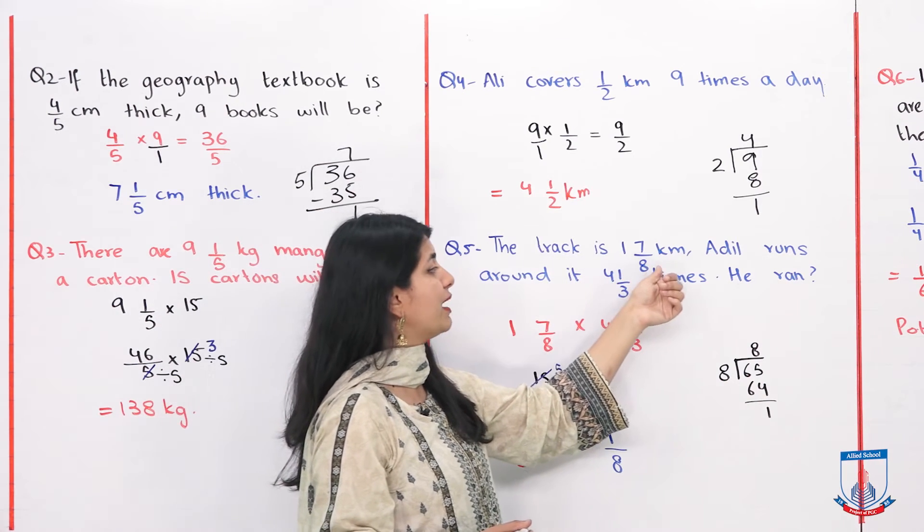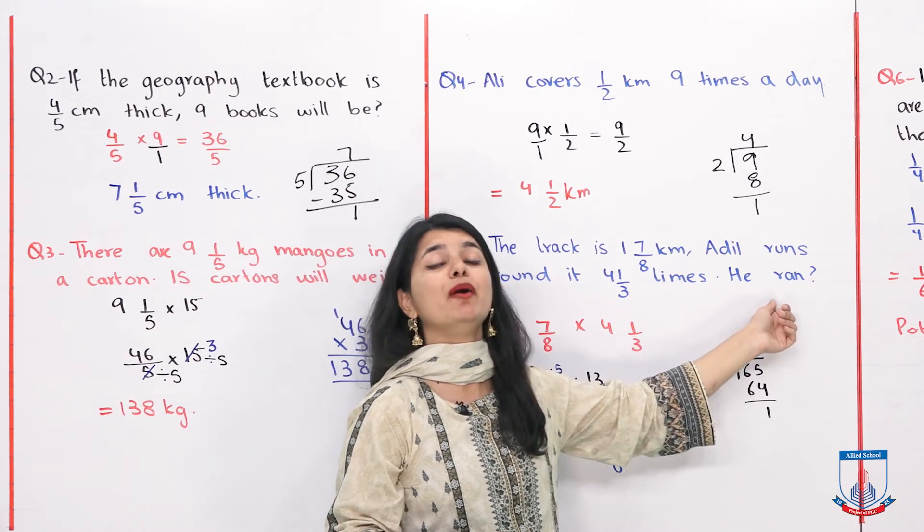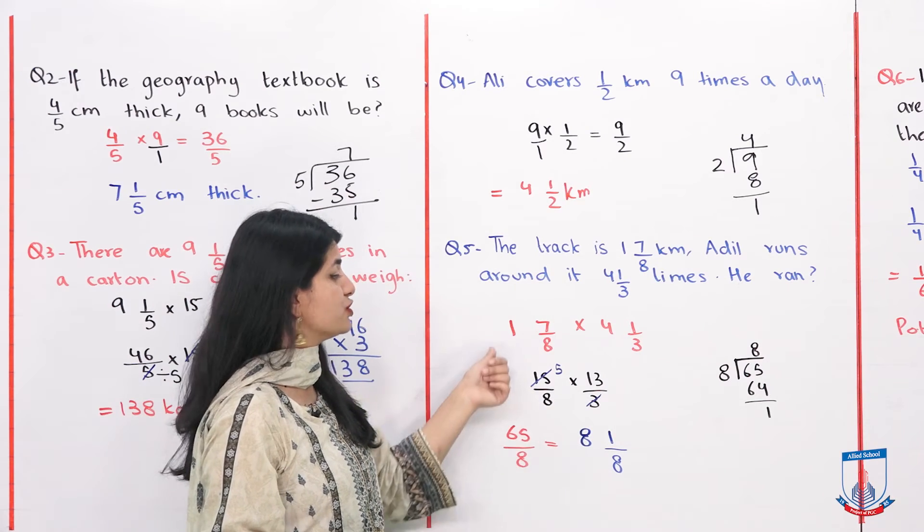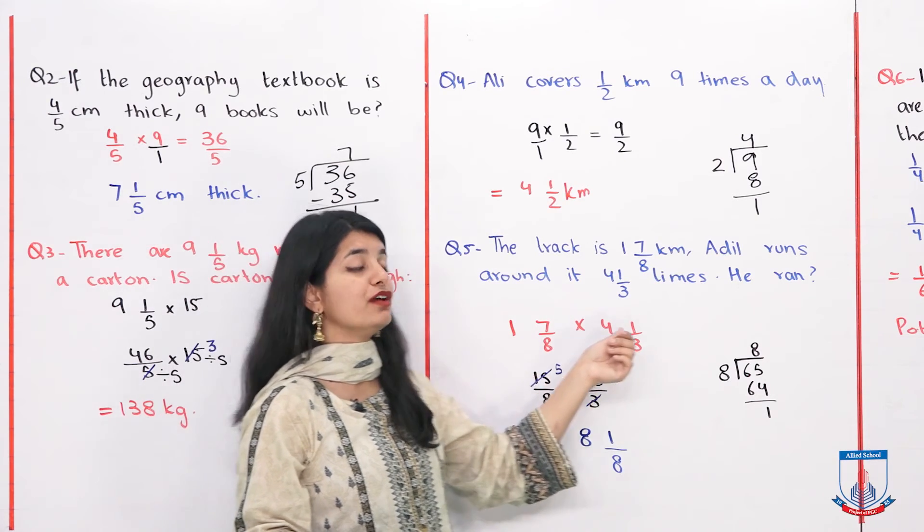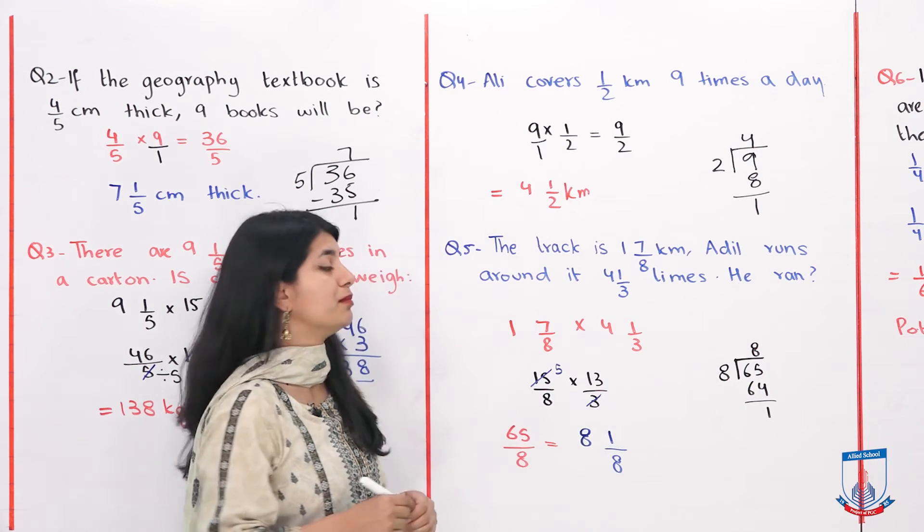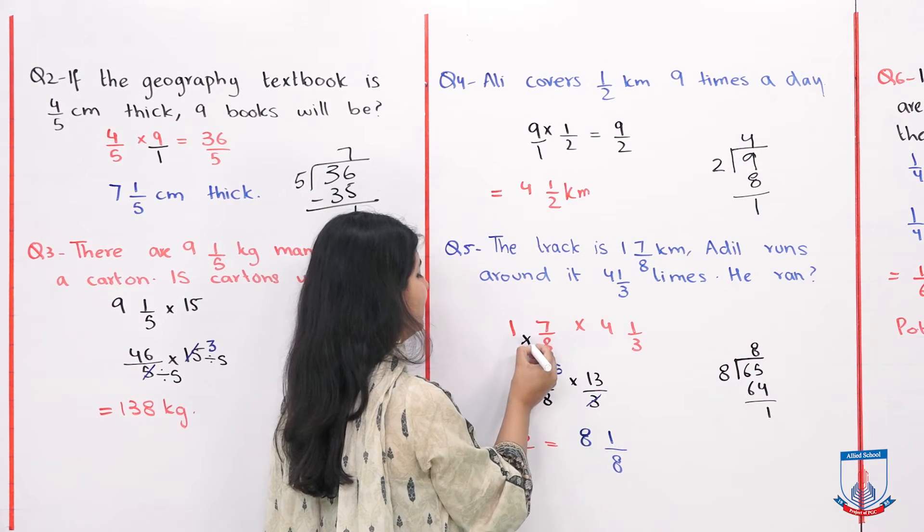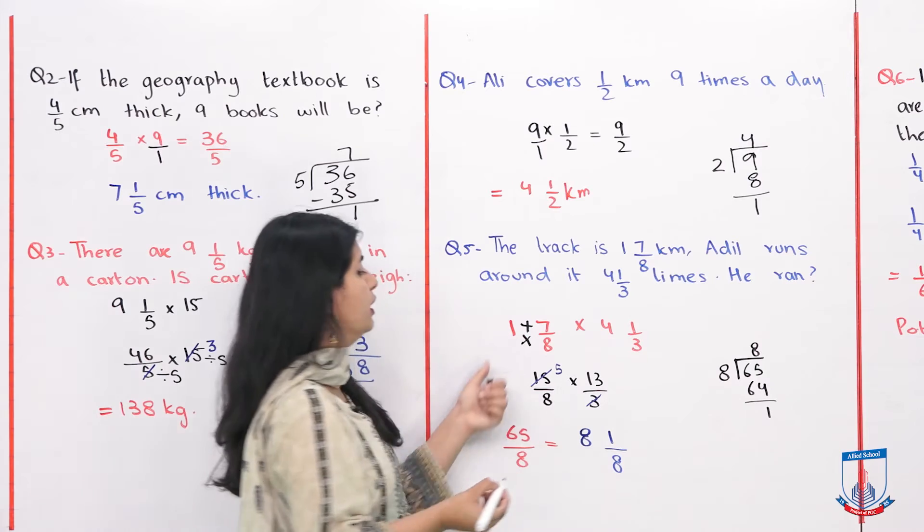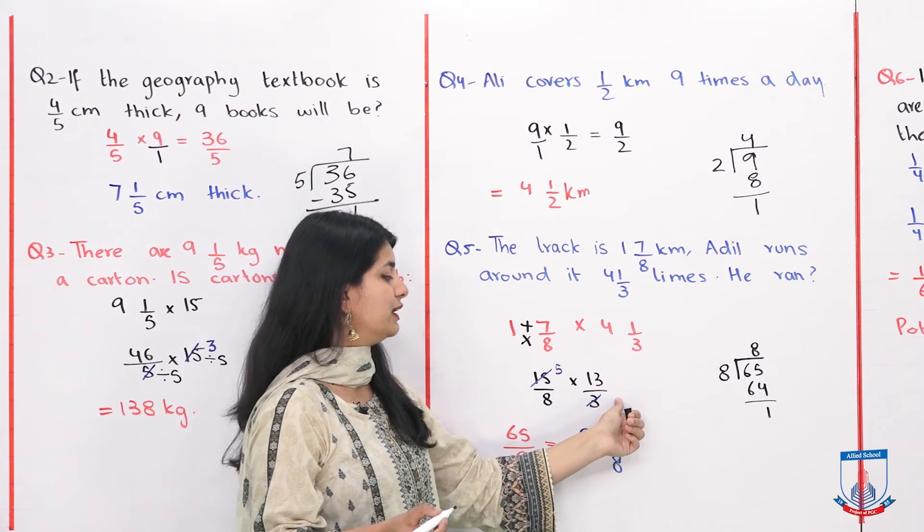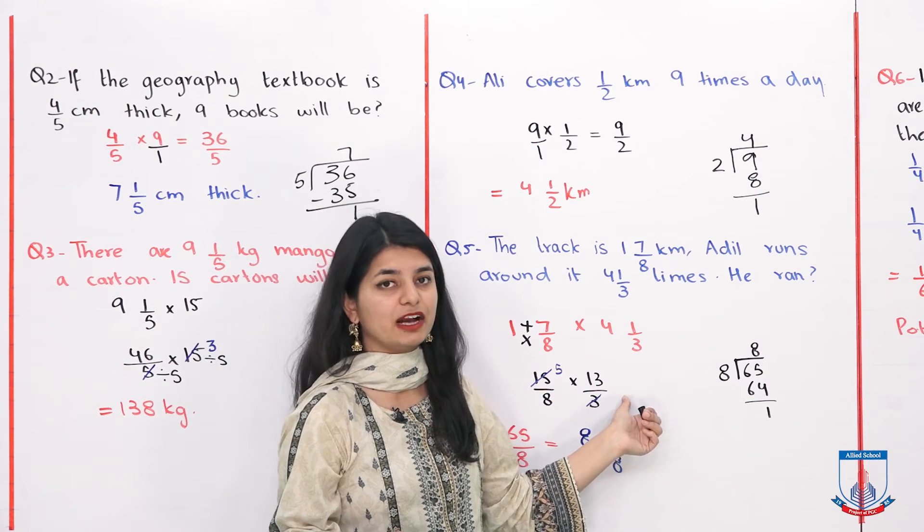Question number 5, a track is 1 whole 7 by 8 kilometer. Adil runs around it 4 whole 1 over 3 times, how much does he run? The total track size is 1 whole 7 by 8 kilometer, he goes 4 whole 1 by 3 times. So what do we have to do? We have to multiply them. First we will convert them. 8 times 1 is 8 plus 7 is 15. 3 times 4 is 12 plus 1 is 13. 15 over 8 into 13 over 3.